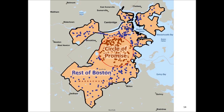We can also look at comparisons between the Circle of Promise and the rest of Boston. Note the challenges regarding drawing any kind of boundary, as there are multiple blue dots sitting just outside the Circle of Promise and are not counted in Circle of Promise numbers. Youth travel across so many boundaries in the course of the school year and the course of their day that there are clear limitations to dividing resources geographically.